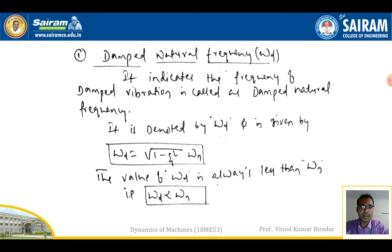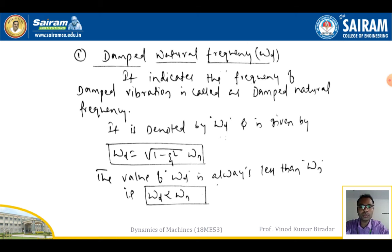The damped natural frequency ωd is given by the formula: ωd = √(1 − ζ²) · ωn, where ωn is the natural frequency, given by ωn = √(k/m). The value of ωd is always less than ωn.